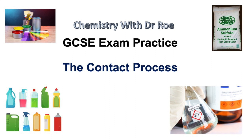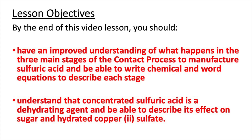Welcome to our latest video in our GCSE revision series. This video is on the topic of the contact process, the manufacture of sulphuric acid. By the end of this video lesson you should have an improved understanding of what happens in the three main stages of the contact process to manufacture sulphuric acid, and you should be able to write chemical and word equations to describe each stage.